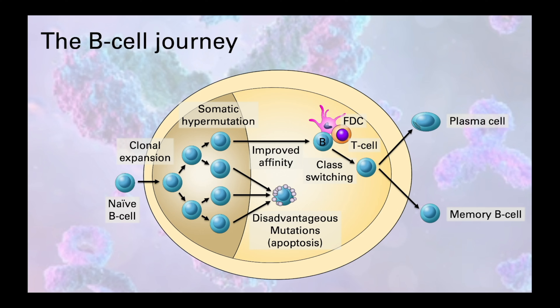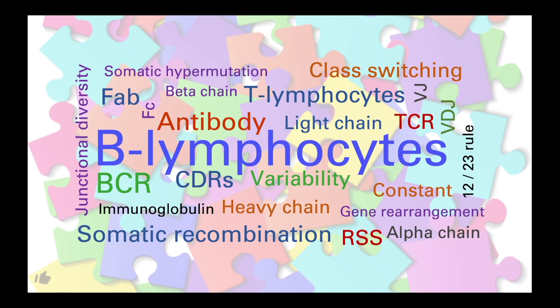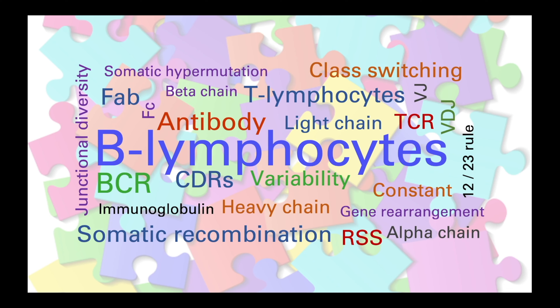That brings us to the end of our journey through the adaptive immune system. In this video we looked at the generation of diversification in T and B lymphocytes that allows them to generate a staggering array of T and B cell receptors covering almost every eventuality, through the process of VDJ recombination, junctional diversification, and somatic hypermutation. I really hope that you have enjoyed this introduction to the immune system and that it has helped you put some of the other diseases in the remainder of this course into context.